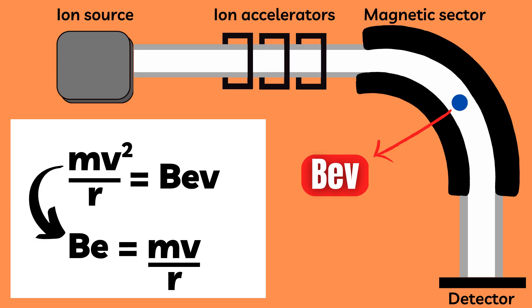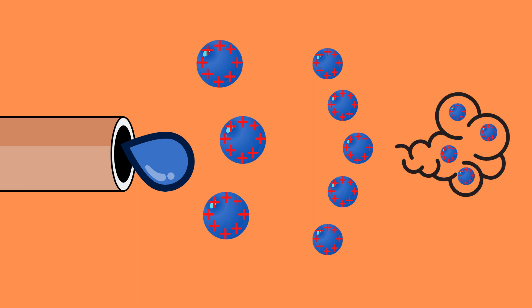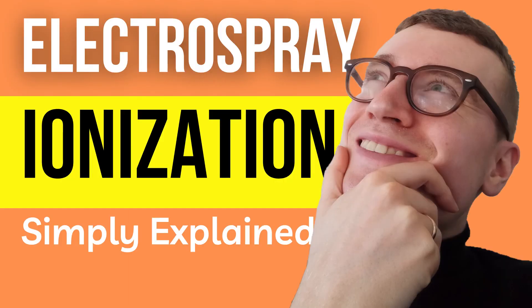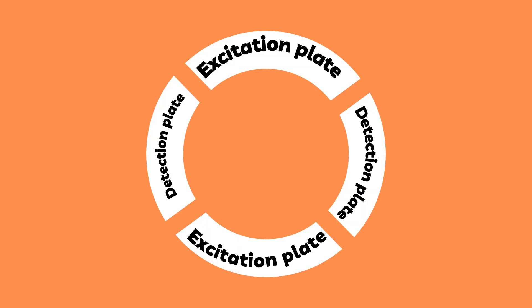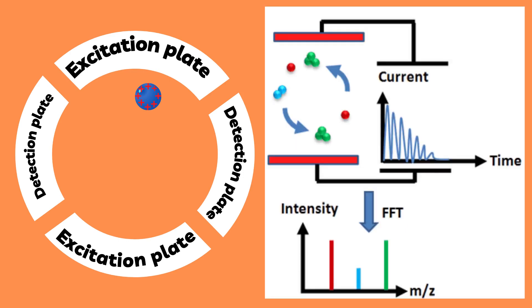Here is a simplified explanation of the FT-ICR process. A sample is introduced into the mass spectrometer and ionized, typically using electrospray ionization, which simply turns the sample into gas phase ions — electrospray ionization is something I discuss in greater detail in this video. The ions are then trapped in a magnetic field and excited by an RF, or radio frequency, field. The vibrational frequencies of the ions are dependent on the size of the ions and are measured using two detectors. The data is collected and analyzed using Fourier transform algorithms, which converts the vibrational frequencies into a mass spectrum that shows the relative abundance of ions at different masses.